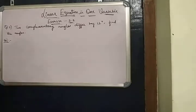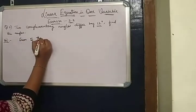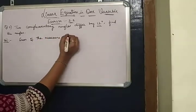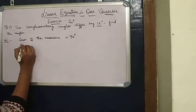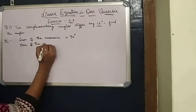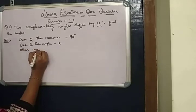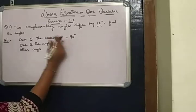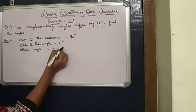The two complementary angles differ by 12 degrees. According to the formula, sum of the measure of complementary angles is equal to 90 degrees. Let us assume one of the angle is equal to x and the other angle is x minus 12 degrees.